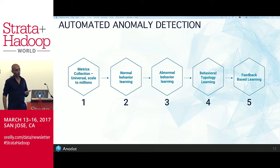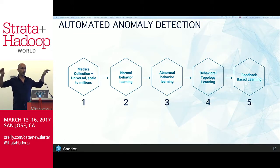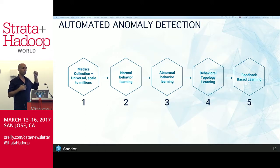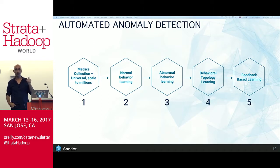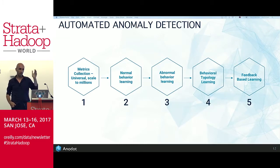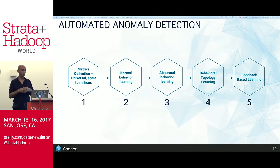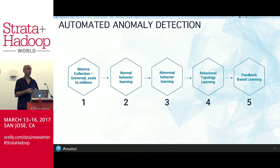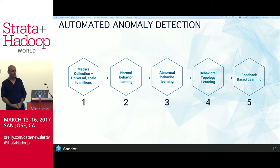The fourth step is behavioral topology learning. All these KPIs are related to each other, so if I detect anomalies individually and then flood you with alerts — for example, ad revenue drops in California affecting so many KPIs — you won't understand anything. You won't see the forest for the trees. If you can build a system that groups all these anomalies together, understands their relationships, and shows you a concise picture, then investigation becomes very fast and you avoid alert fatigue, which can cause people to miss serious problems.